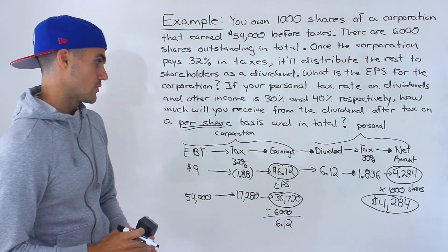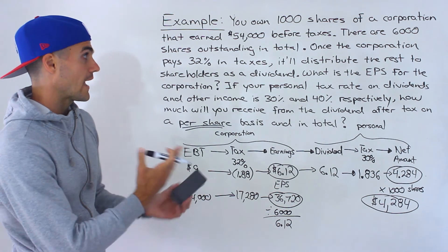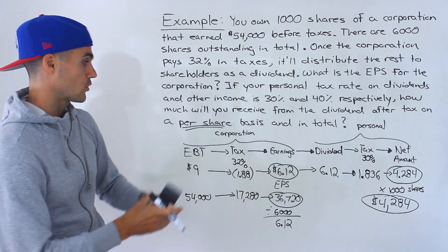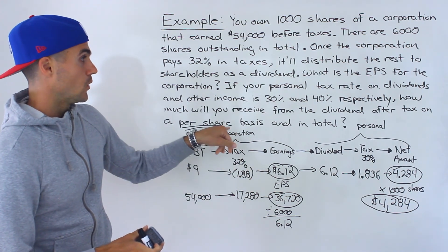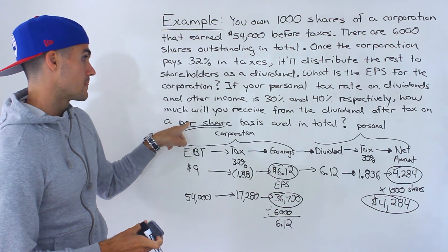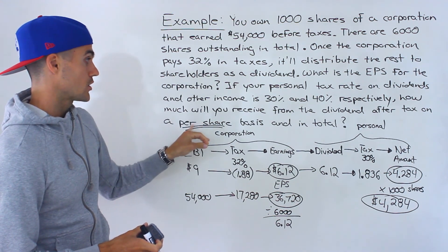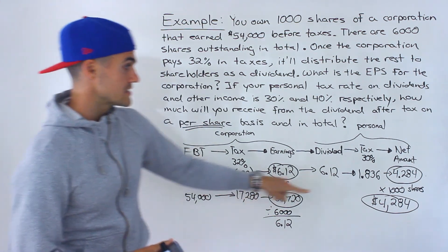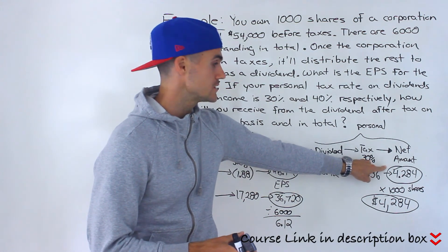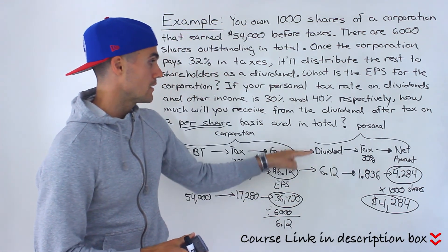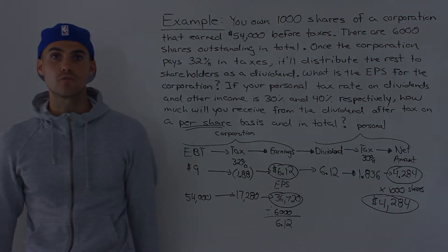So the three answers here: the EPS for the corporation is $6.12. The amount you receive from the dividend after tax on a per share basis is $4.284, or $4.28 if you round to the nearest cent. And then the total amount you receive is $4,284.